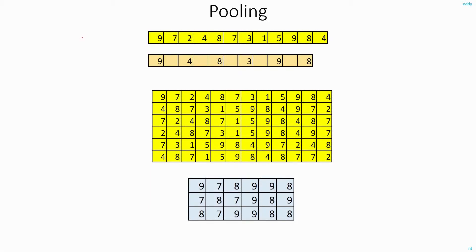Another technique commonly used along with convolution is called pooling. In 1D pooling, you take a window of 2 and use a stride of 2. You consider two values and find the maximum — in this case it's 9. Then you shift the window by two indexes and find the maximum of the next two values. In this case it's 4, then 8, then 3, giving you 9 and 8. So this is your pooled feature map.